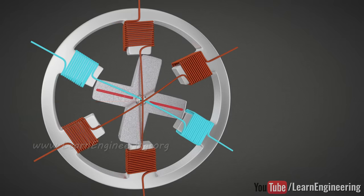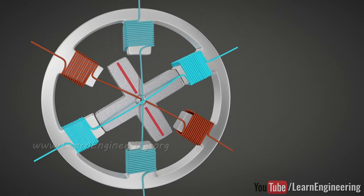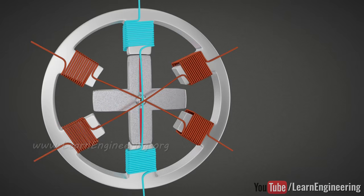After this, de-energize A. Then, after reaching B, energize C as well. This kind of operation is known as half-stepping.